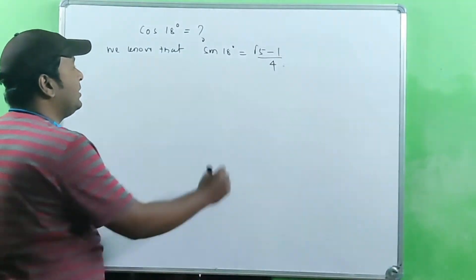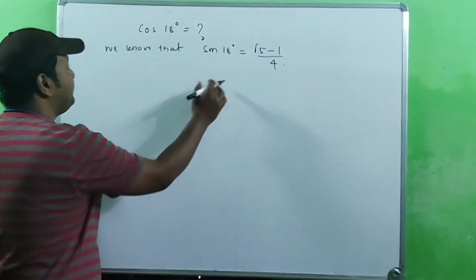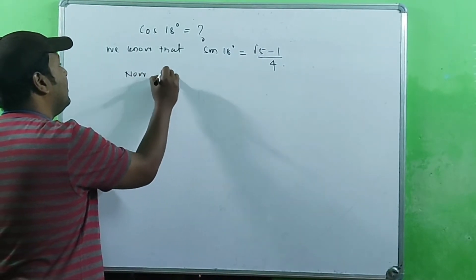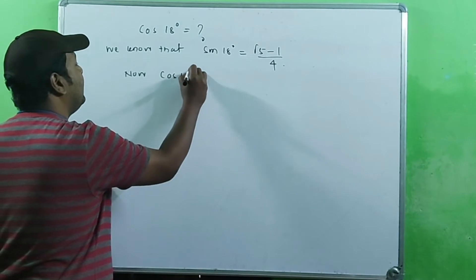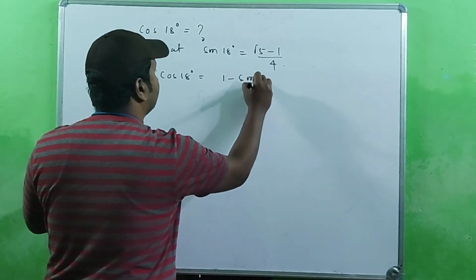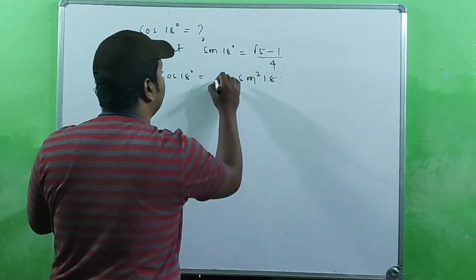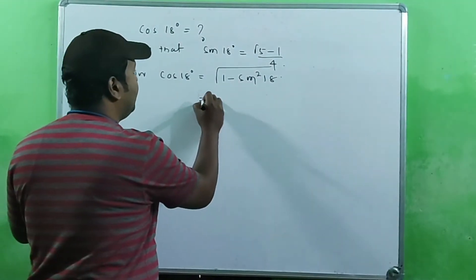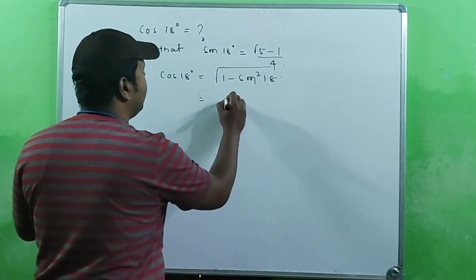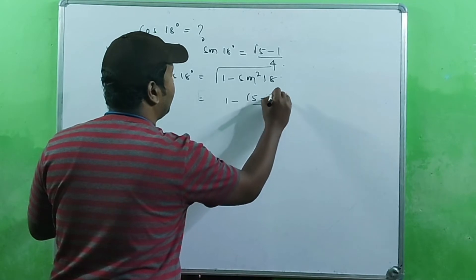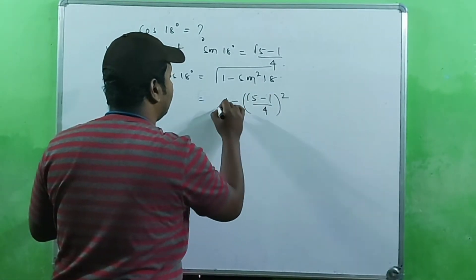For the derivation of that value, you can check the description box. Now, cos 18° is equal to √(1 − sin²18°). Putting in the value of sin 18°, we get √(1 − ((√5 − 1)/4)²).